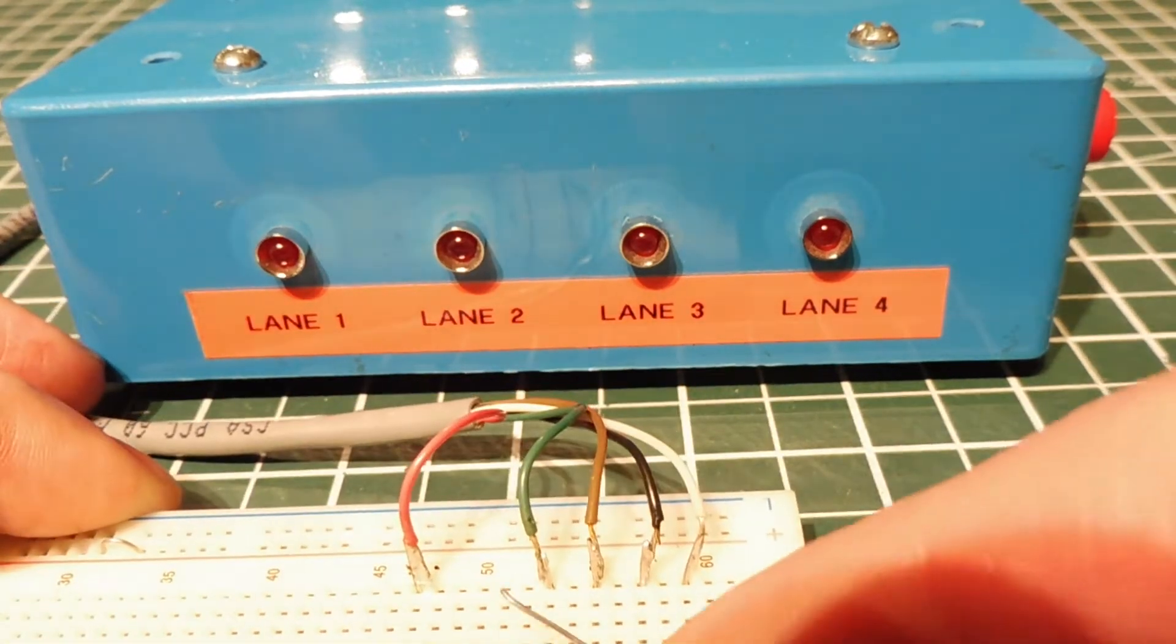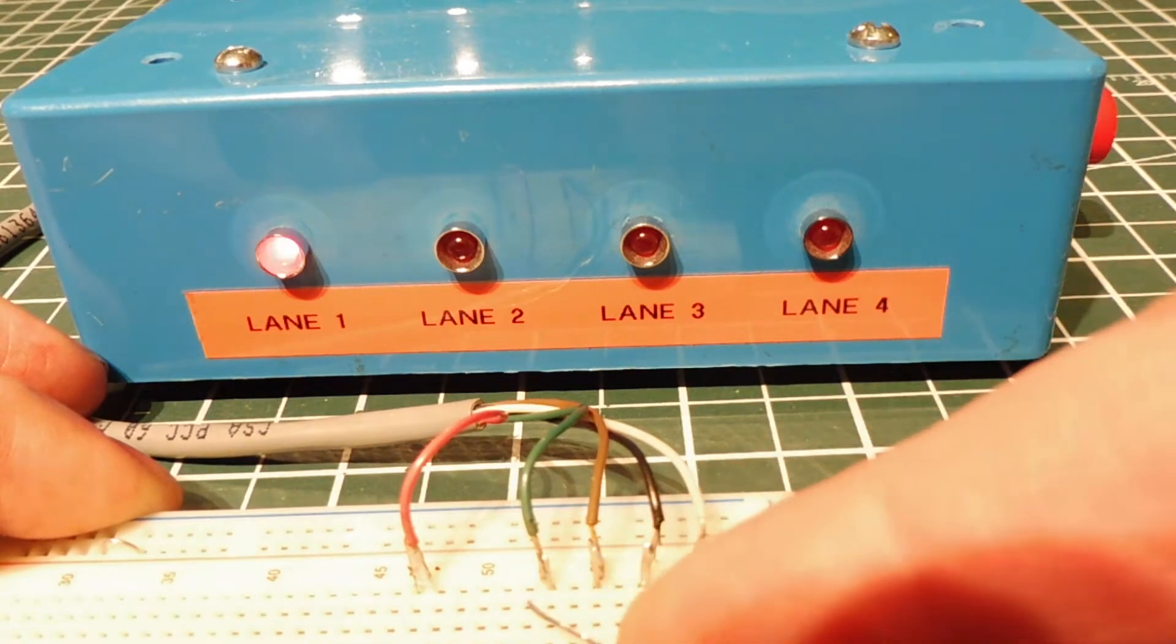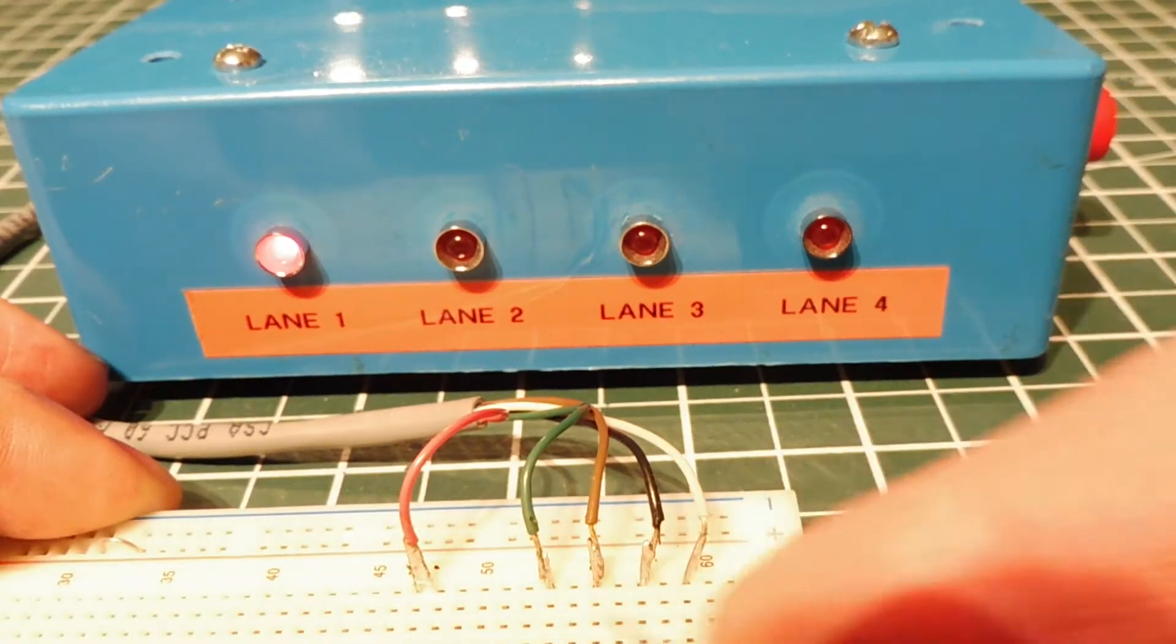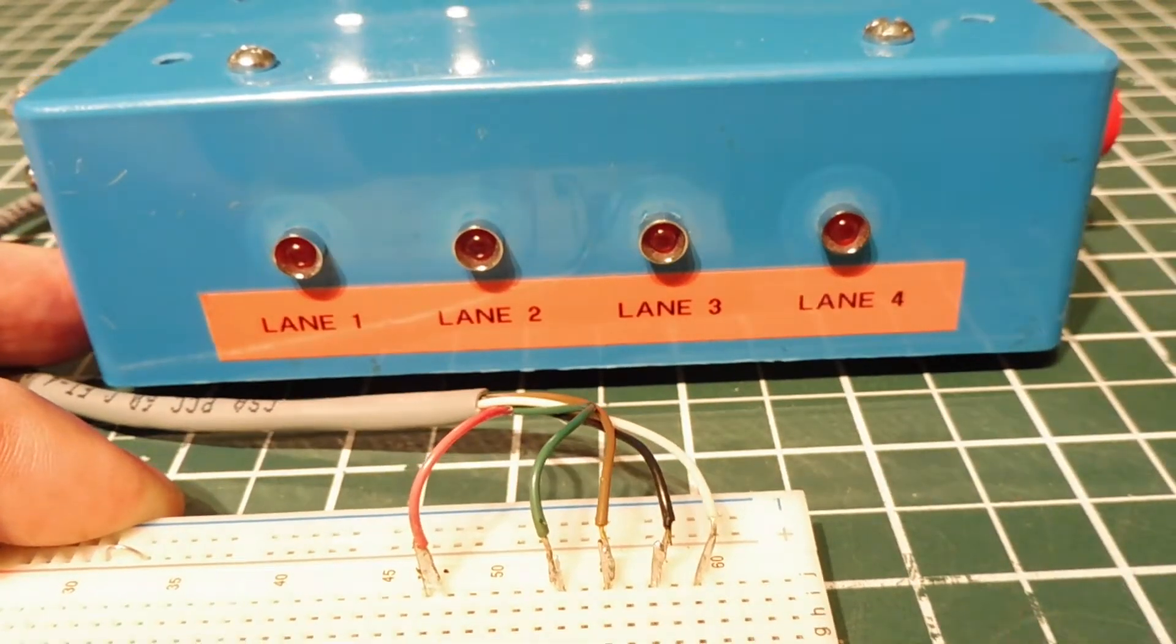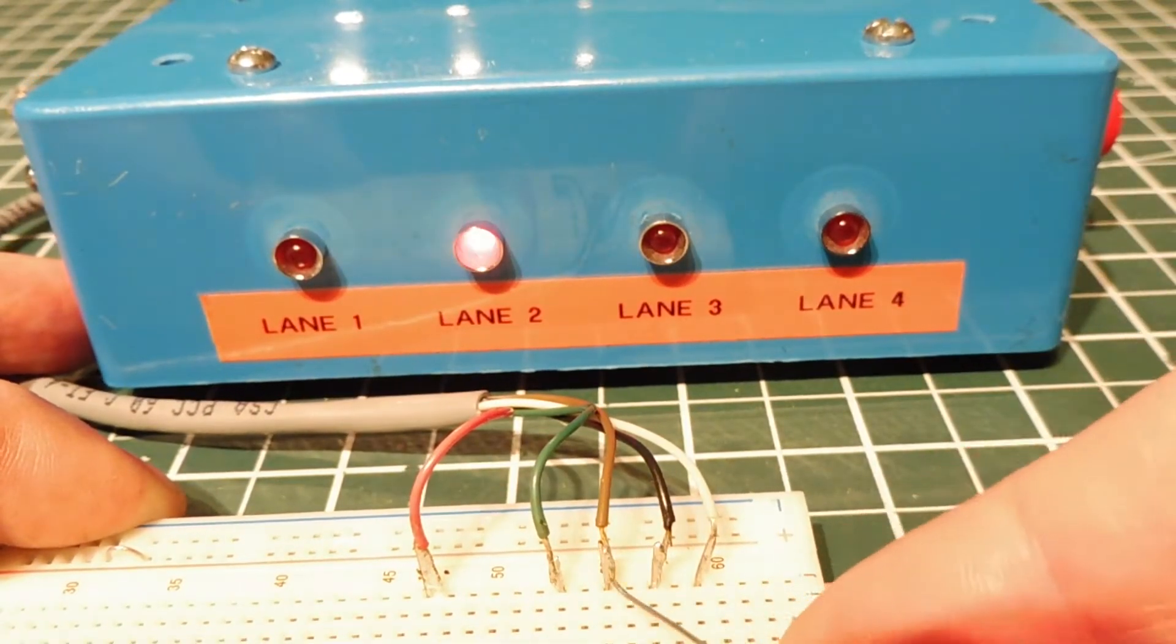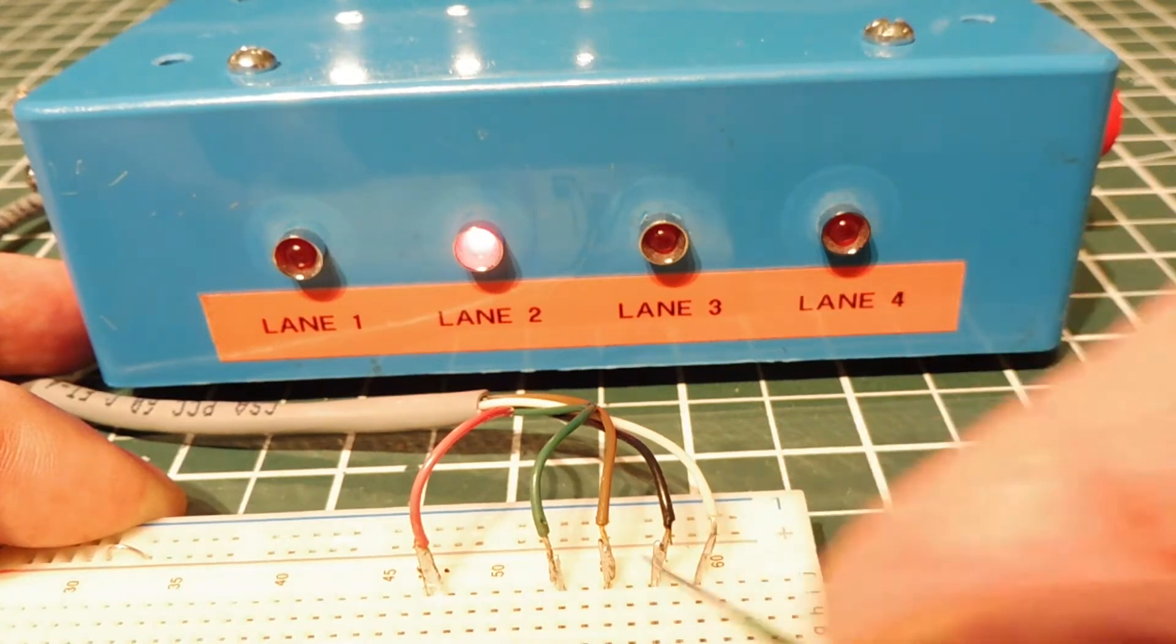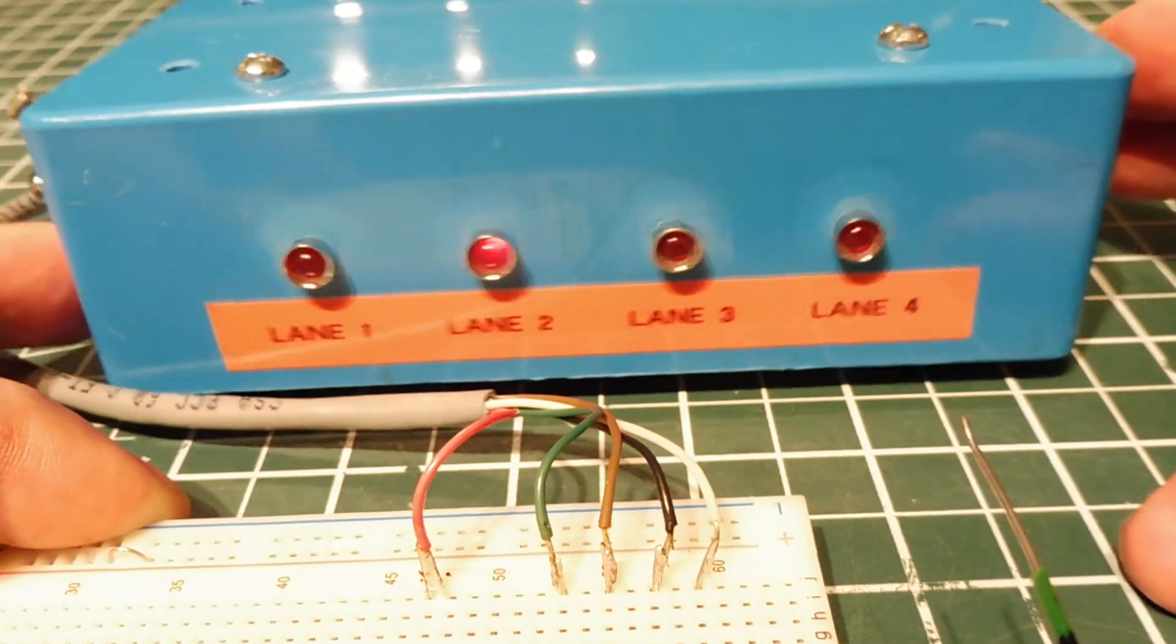So I'll start on lane one. I'll trigger lane one. You can see lane one LED comes on, and if I trigger the rest of them nothing happens. So I do a reset. I could trigger lane two. Now if I trigger any of them nothing happens.